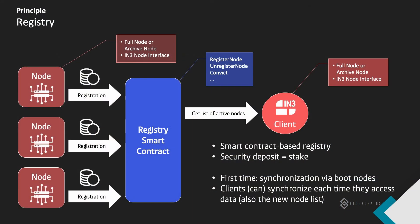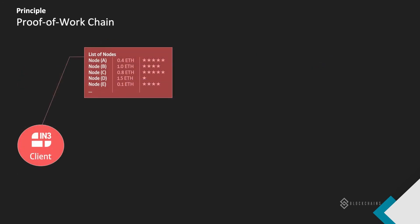So how does it work? First, we have these full nodes running in the network. These nodes can register in a registry smart contract — they provide metadata, give a security deposit, a stake. All the clients can synchronize this list of nodes, and with this they have the information about which nodes they can talk to. When one of these clients needs information, it looks up which of these nodes is able to answer its questions, sees how much deposit they have, what their reputation is, and so on.